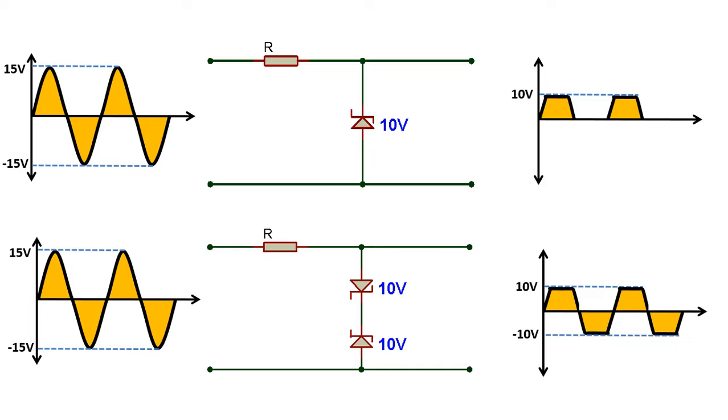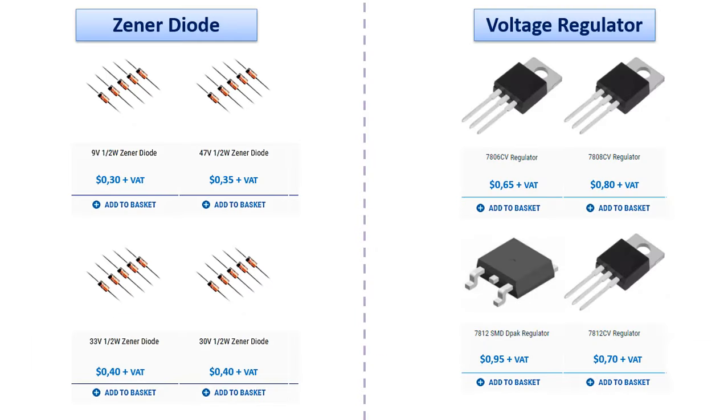If Zener diodes actually do the job of voltage regulators, you may have a question why Zener diodes are used. This is mainly due to the lower price of Zener diodes. Here, you can see the Zener diode and voltage regulator sample price comparison that can do the same job. For a single one, these price differences may seem like very little, but in industrial applications where we need to use a lot, this ratio becomes important.